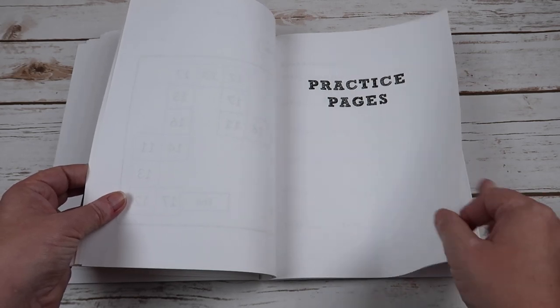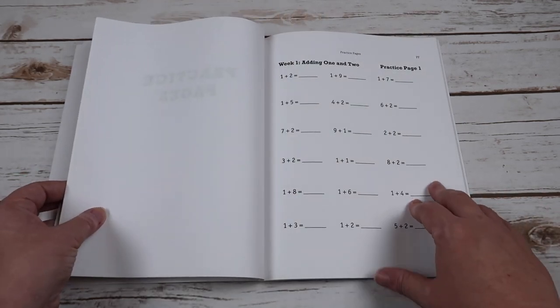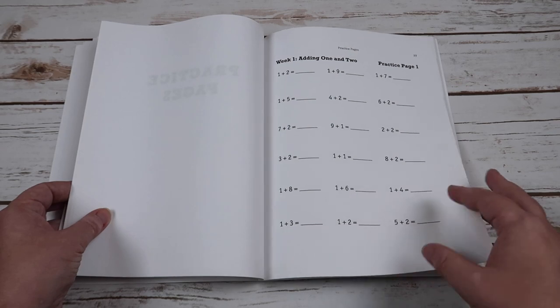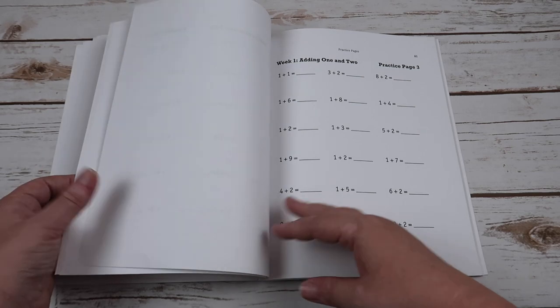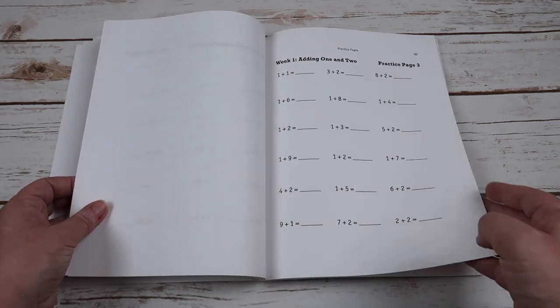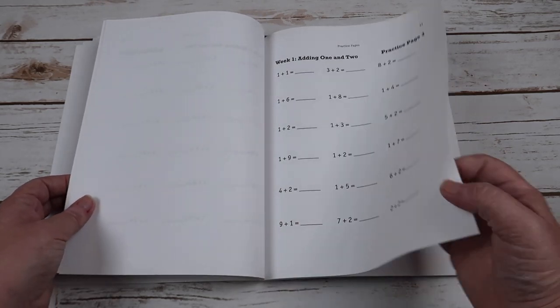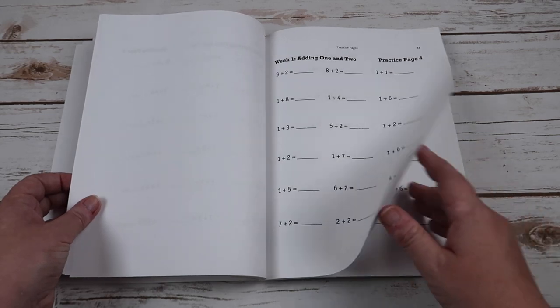And then these are the practice pages. So this would be week one. And you can see that's titled at the top to make it easy for you. Practice page two. So it's very easy. Even if you rip these out and it was to fall apart, you're still going to know what week and what day to be doing all of your practice pages.